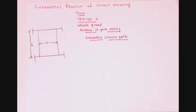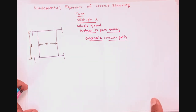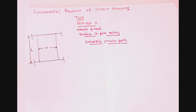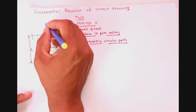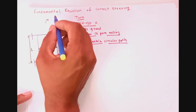All the wheels should move along concentric circular paths while the vehicle is taking a turn, so that pure rolling motion is maintained between the wheels and the road surface. To satisfy this condition, the axes of all the wheels must intersect at a common center. Let us consider the top view of the vehicle frame, and suppose that the vehicle takes a right turn.